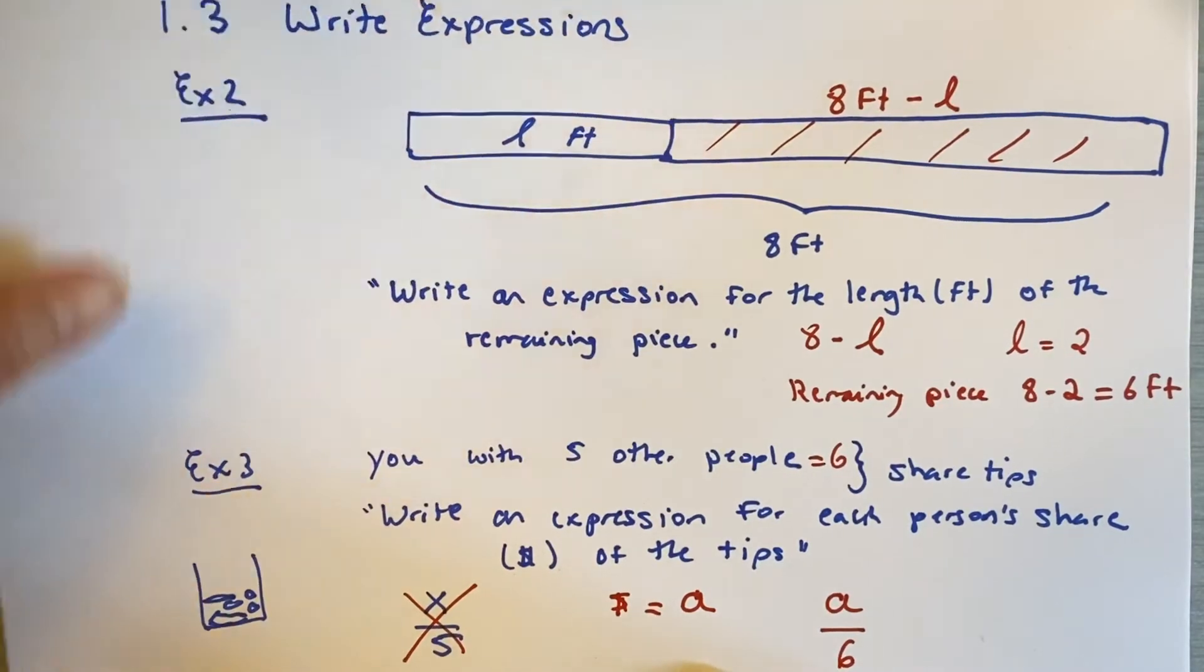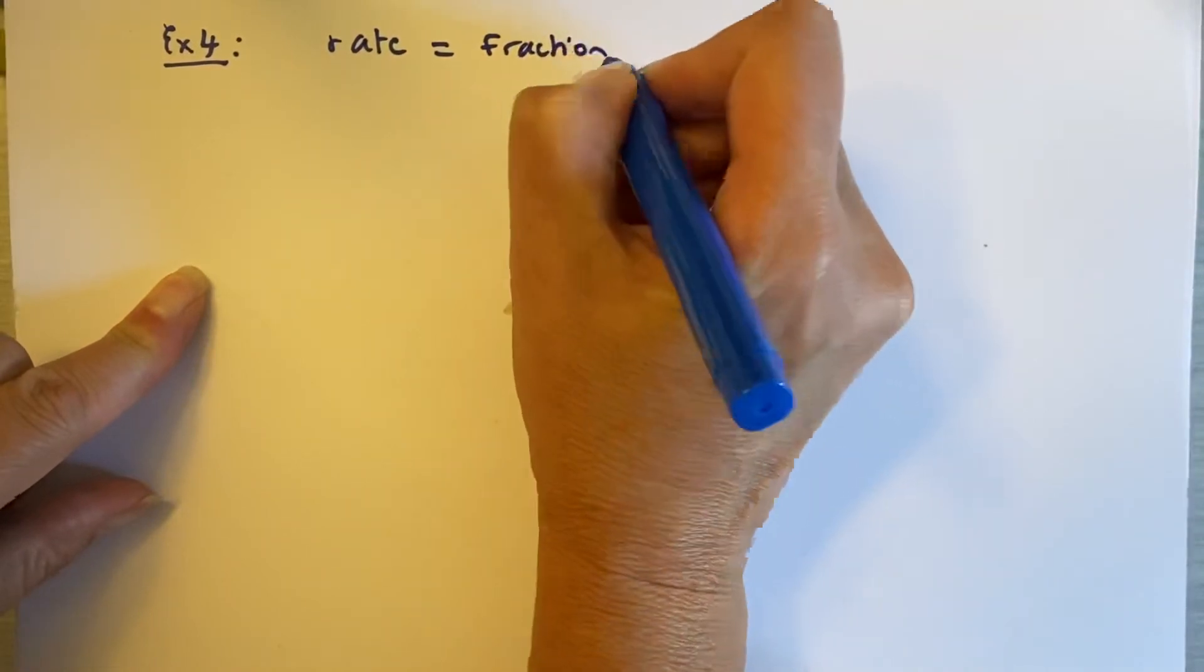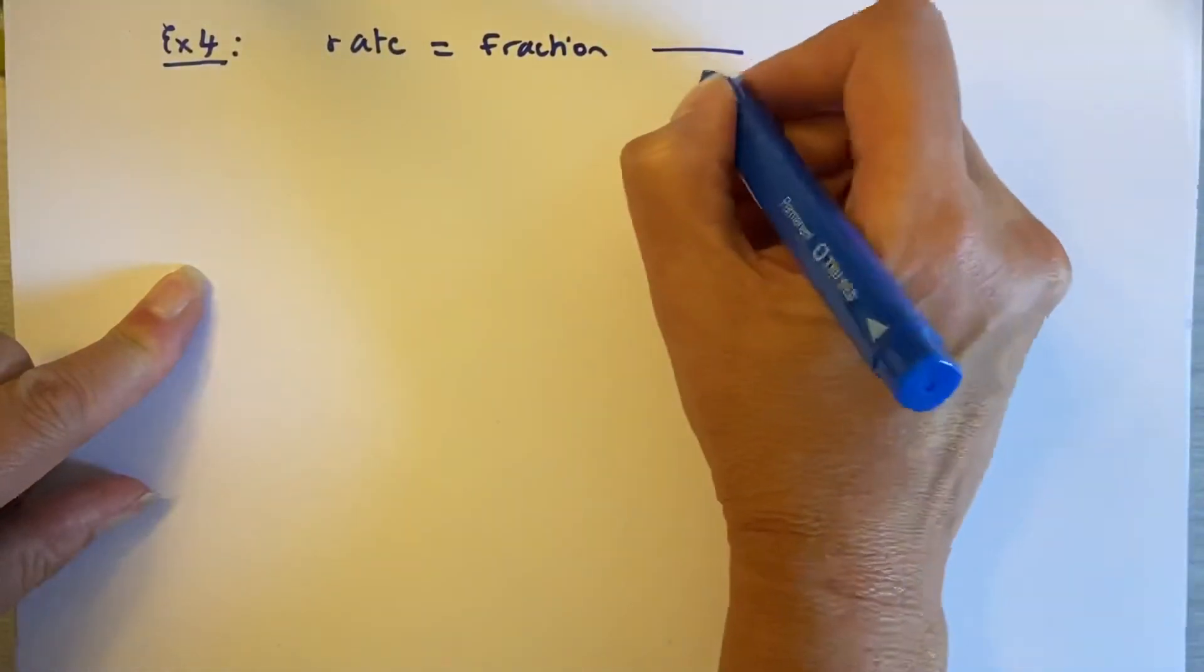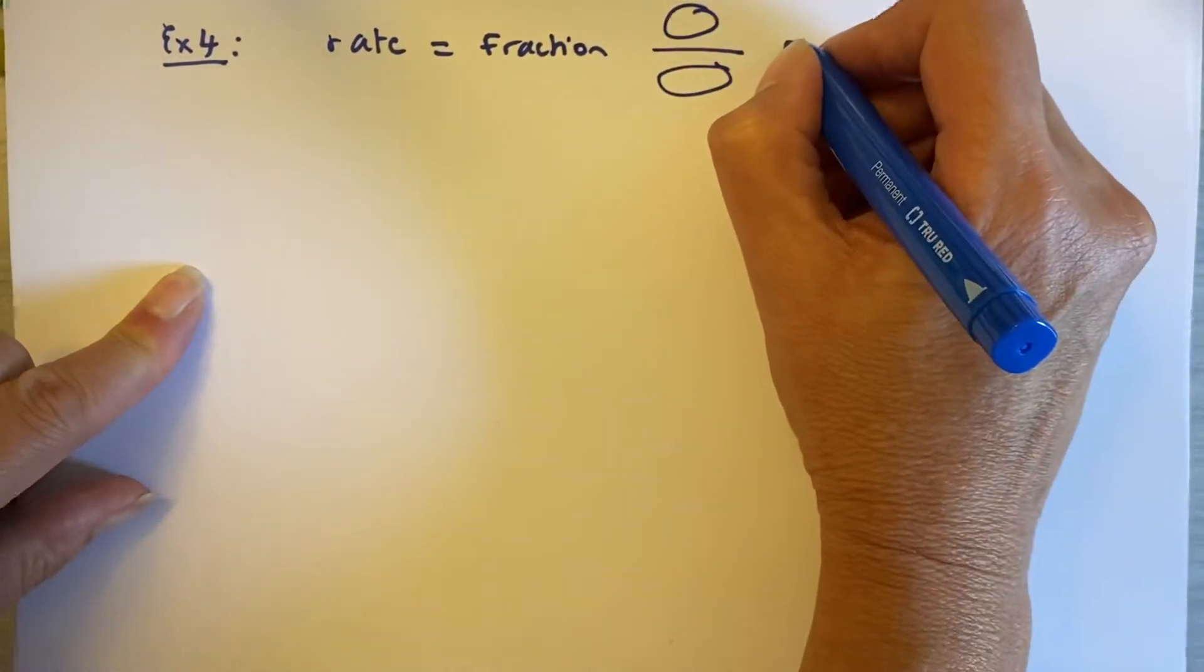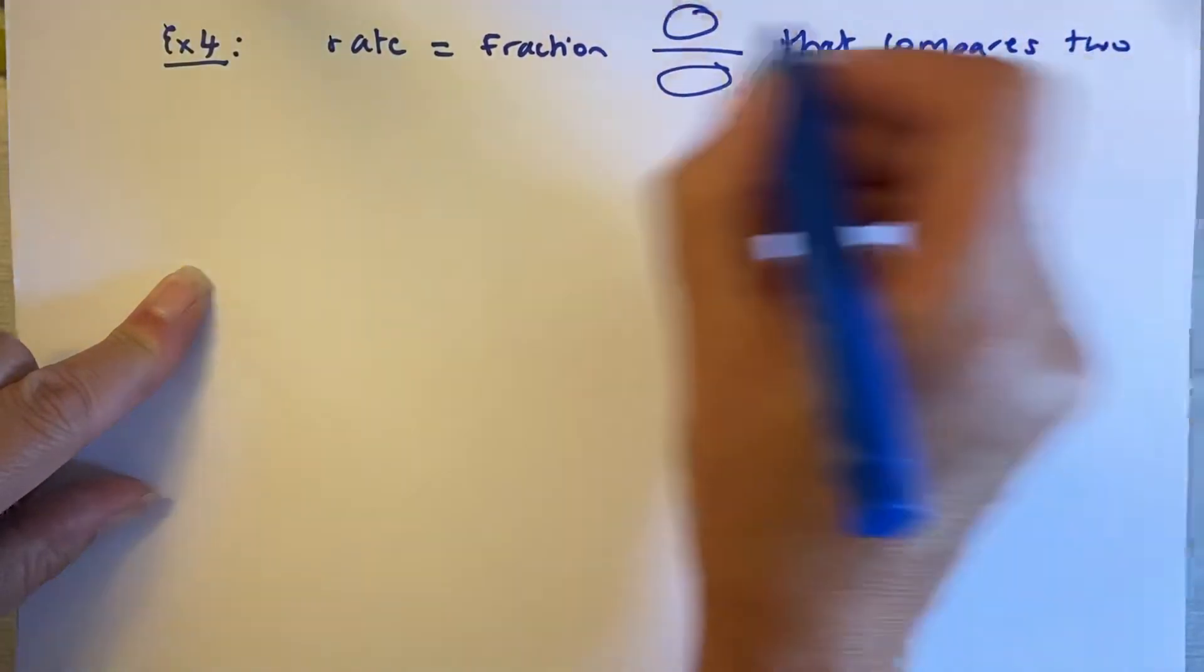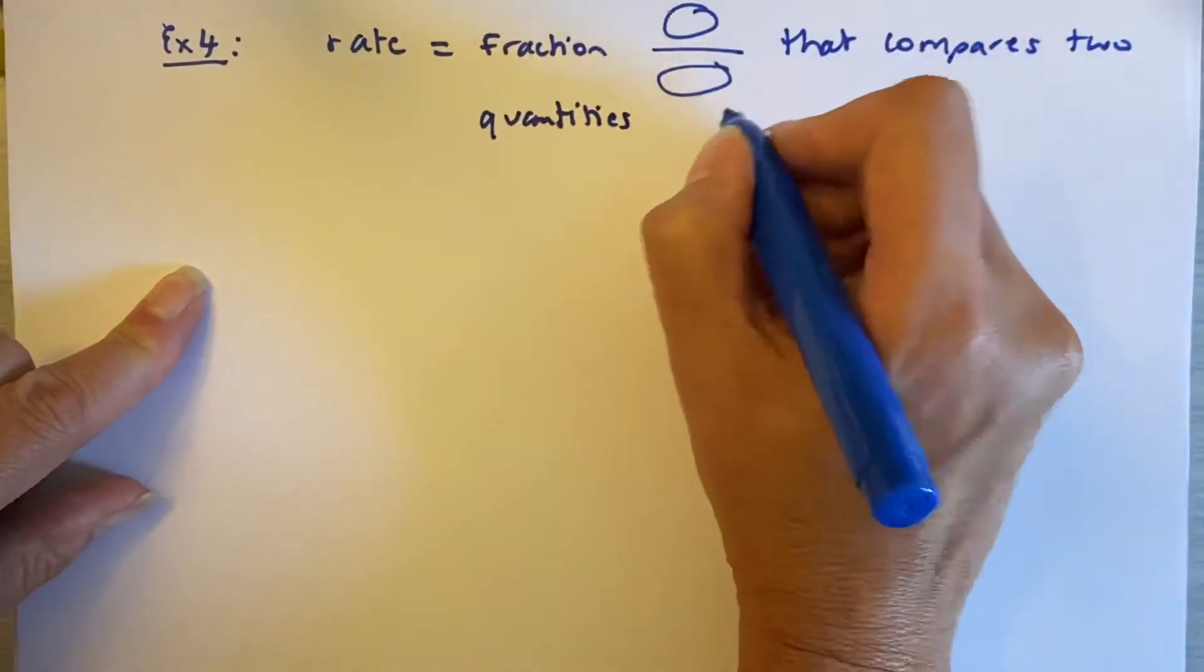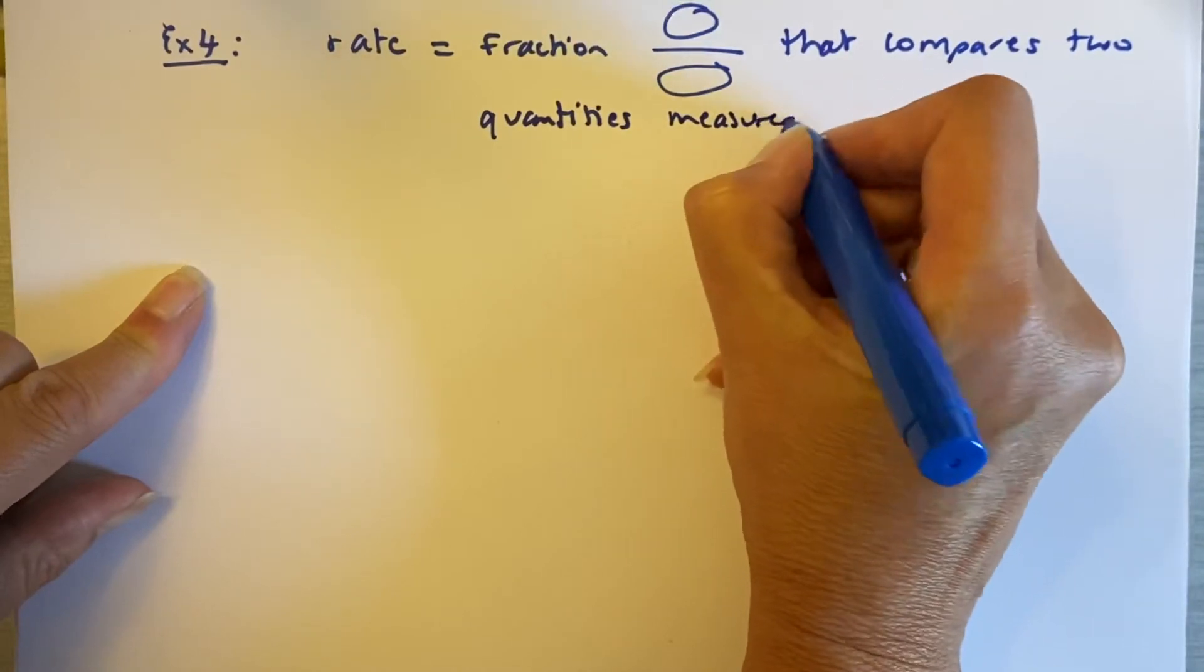Okay. Let me go to the next example. I'm going to turn this over so there's less marks on it. Example four. Now, to do example four, you need a little reminder of what a rate is. A rate is a fraction, number one.